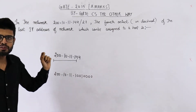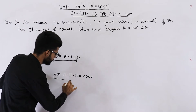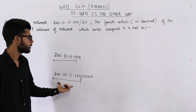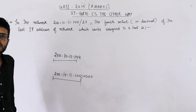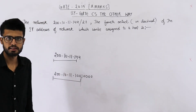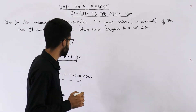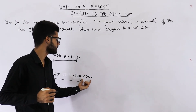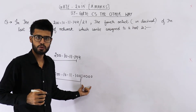Now the first 27 bits will be from the start up to this point. All of these bits represent the network ID. So now let us find what all IP addresses will be in this network. For finding out all the IP addresses, you can just keep on changing the host ID bits. These 5 bits are for the host ID.